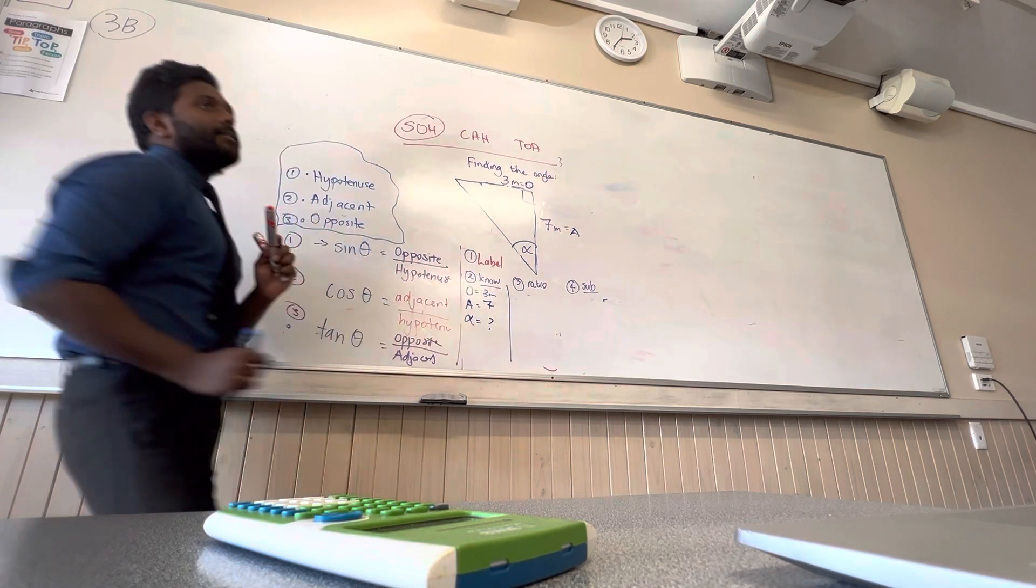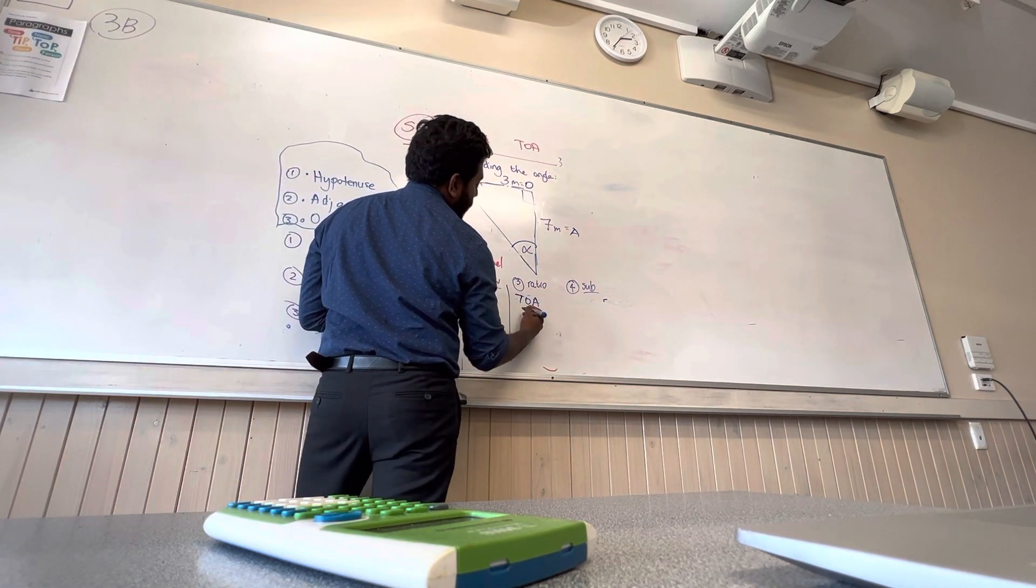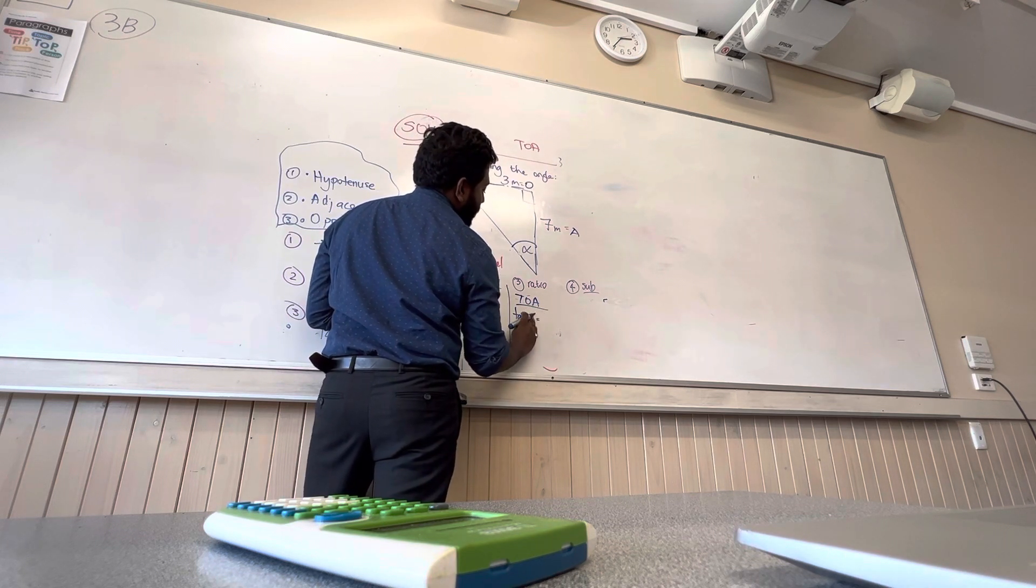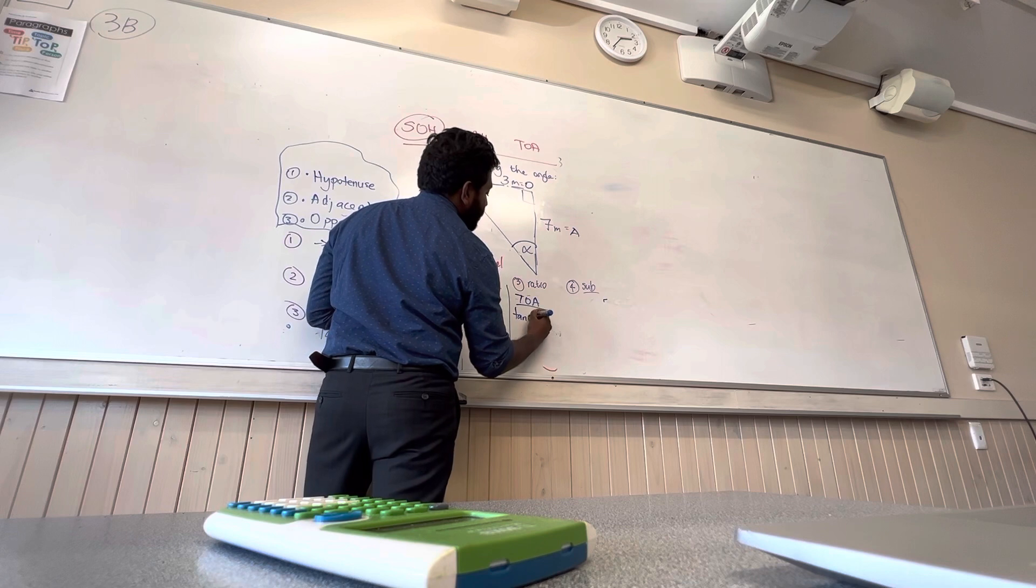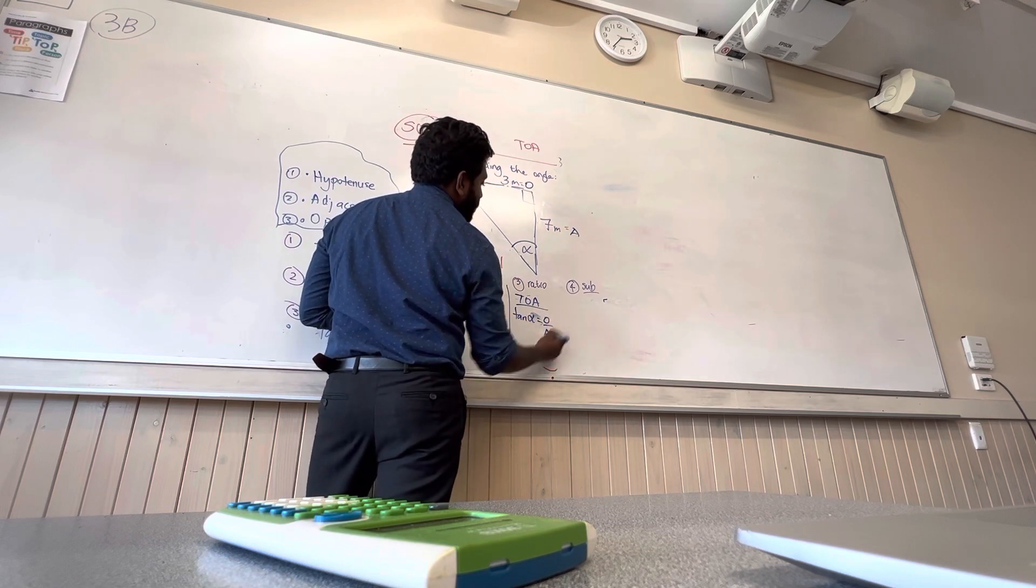So O and A is going to be TOA - T-O-A. That's tan theta, or in our scenario, it is tan alpha equals O over A. Then we're going to substitute.